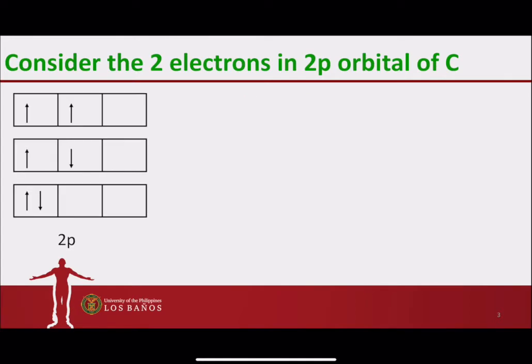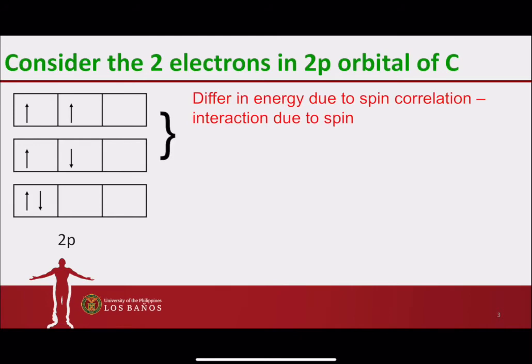If we compare the middle arrangement with that of the top arrangement, the two electrons are in two different 2p orbitals, but in the middle arrangement the electrons are of opposite spin, whereas in the top arrangement the electrons are in parallel spin. The top arrangement is a more stable arrangement because of the interaction due to spin. The energy difference is due to the spin correlation.